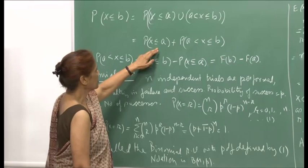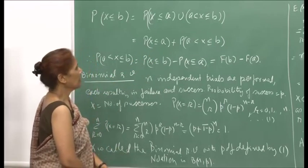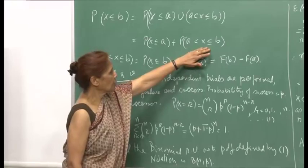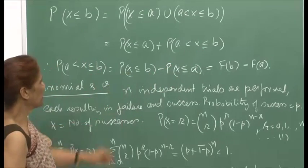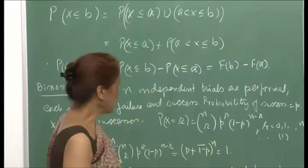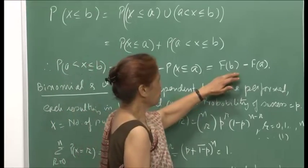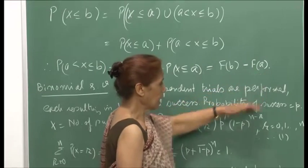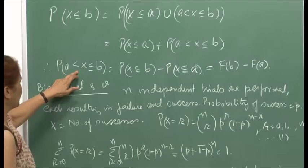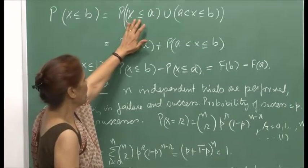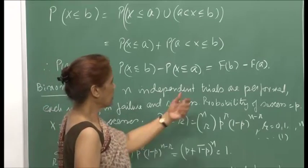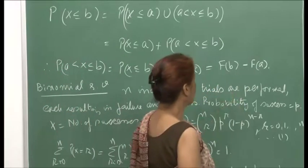So, probability of x ≤ a plus probability of a < x ≤ b. This probability can then be written as the difference: probability x ≤ b minus probability x ≤ a, which is F(b) minus F(a). If you want equality at a, then the event would be x strictly less than a, in which case we will have to write F(a−) and so on.